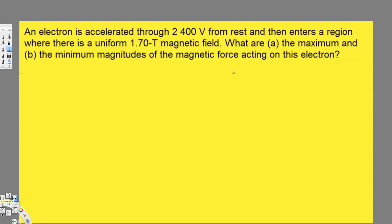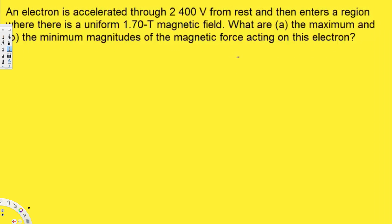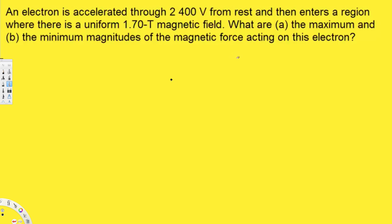Let's try this problem. This question is asking: an electron is accelerated through 2400 volts from rest and then enters a region where there is a uniform 1.7 tesla magnetic field. What are the maximum and the minimum magnitudes of the magnetic force acting on this electron?